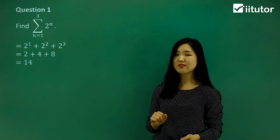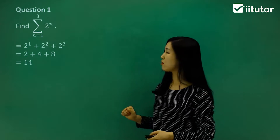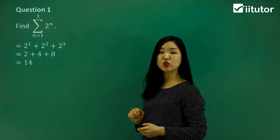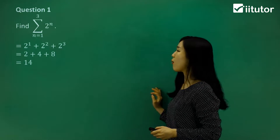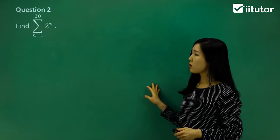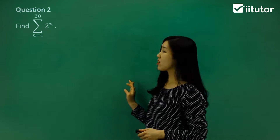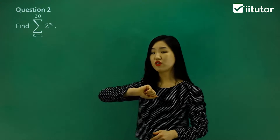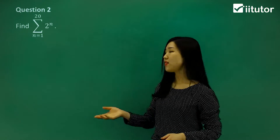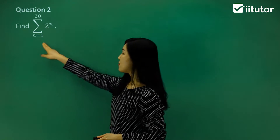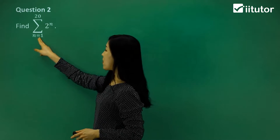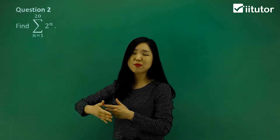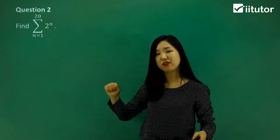That's my sigma notation — the sum equals 14 in question 1. Let's go to question 2. Again, we've got a sigma notation with 2 to the power of n. But look at the numbers: we start with n equals 1 again, but this time we go all the way to n equals 20. So it's going to be quite a large series.